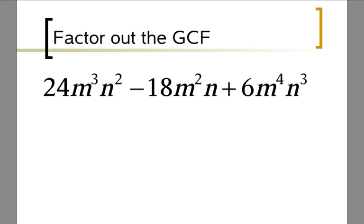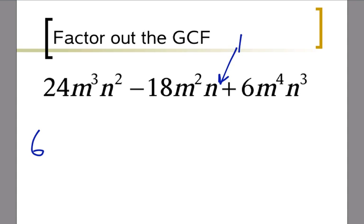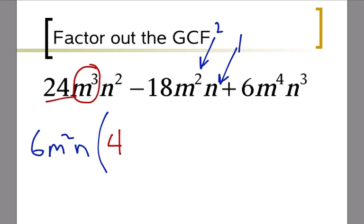This time we've got two variables in common. Looking at 24, 18, and 6 — they all have 6 in common. But I'm also pulling out an m and an n. Looking for the lowest exponent: the lowest exponent on n is 1, and the lowest exponent on m is 2. So I pull out 6m squared n. Then working through: 24 ÷ 6 is 4, and m cubed divided by m squared leaves 1m; dividing by n leaves 1n. So that term gives 4mn.